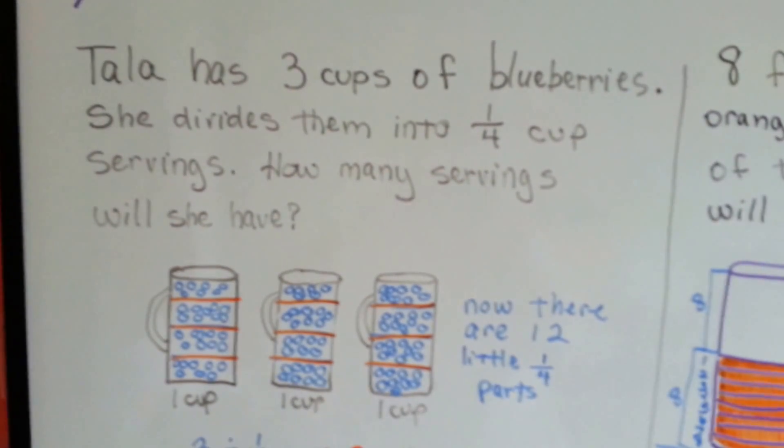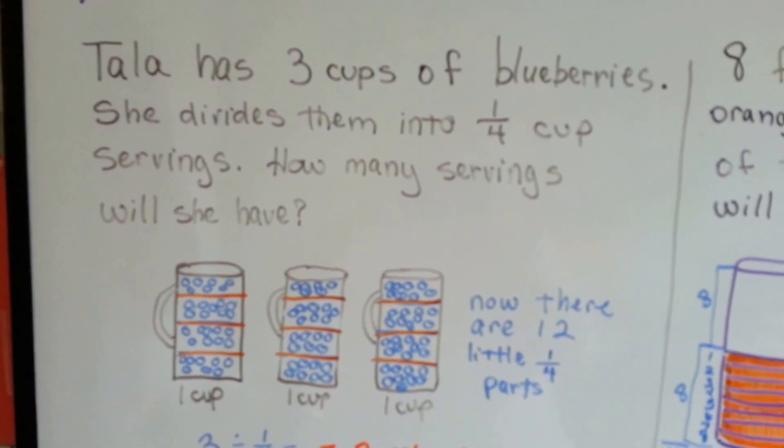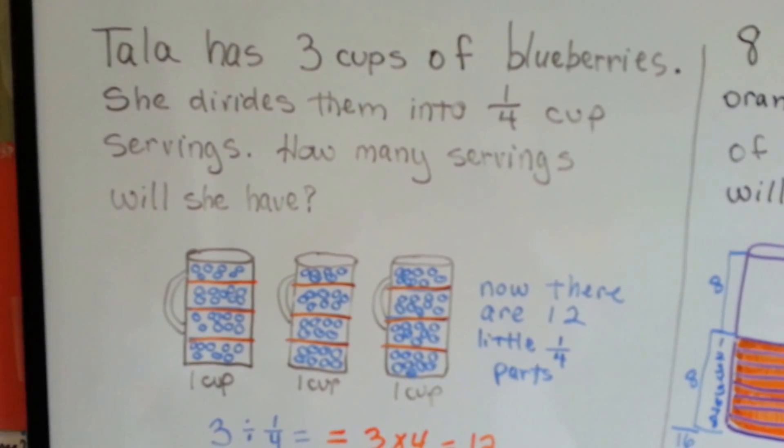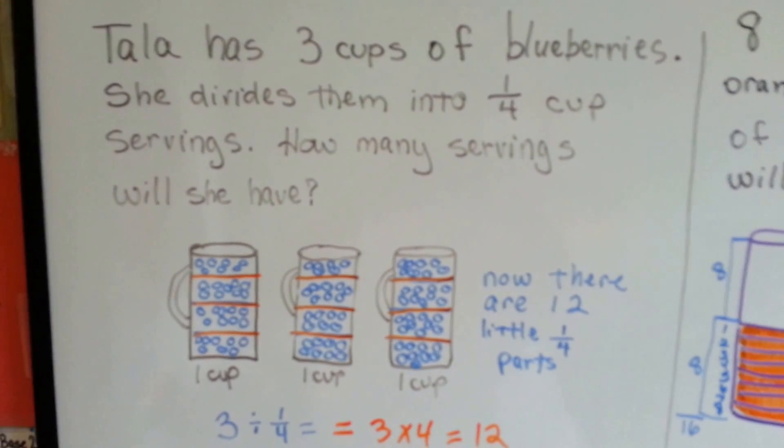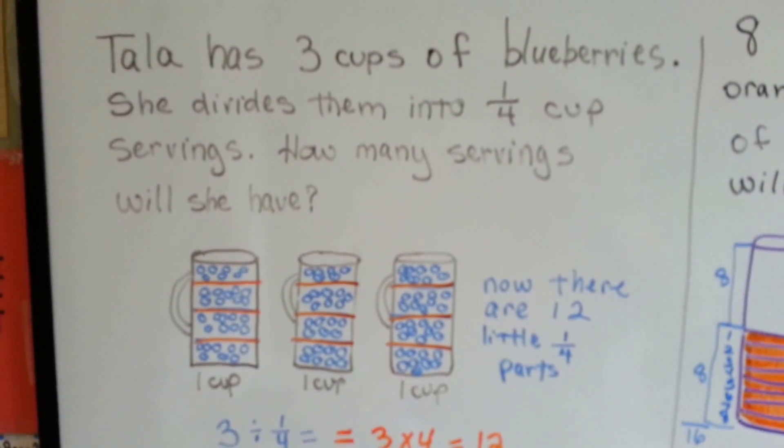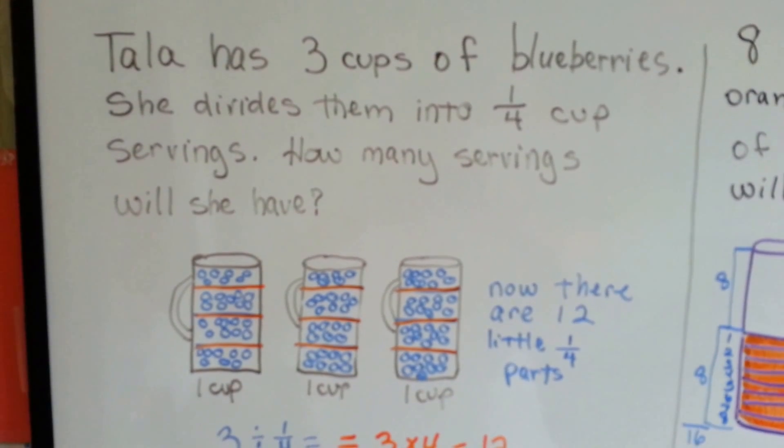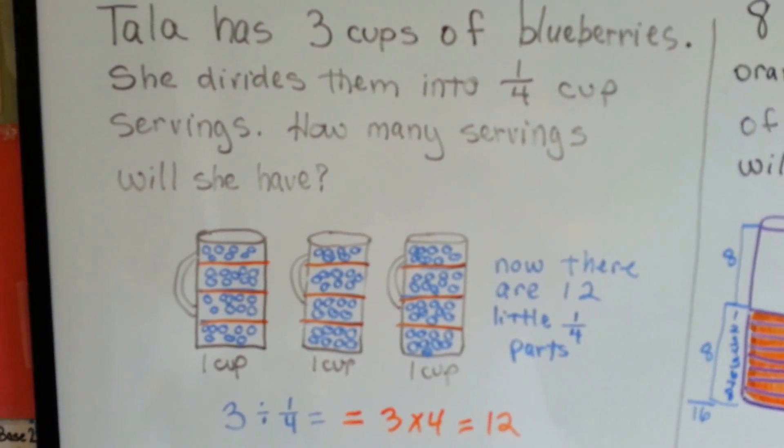Well, Tala had three cups of blueberries. She divides them into one-fourth cup servings. How many servings will she have? By having a diagram, equation, or story problem to represent the division, it'll help us visualize the problem so we can solve it easier.